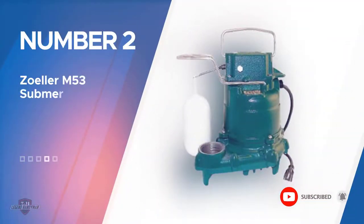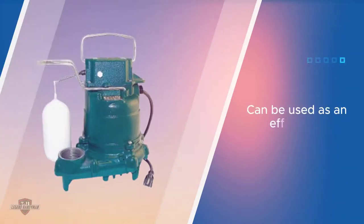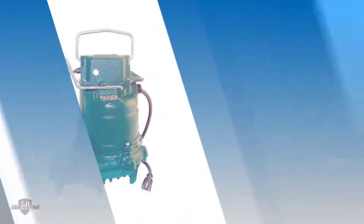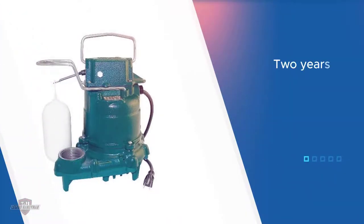Number two: Zoller M53 submersible sump pump. This one-third of a horsepower submersible pump from Zoller can also be used as an effluent pump in a septic tank. It is able to pass up to one-half inch solids with a flow rate of 2,580 GPH. This pump is certainly not the most powerful on this list. The price, however, is up there with the other highest priced sump pumps.